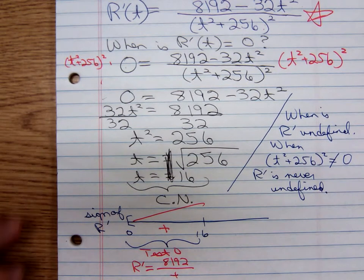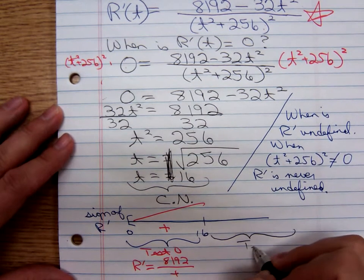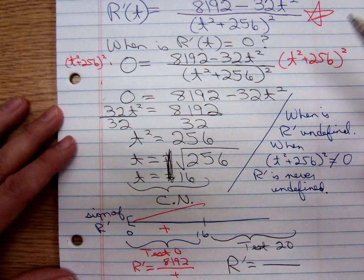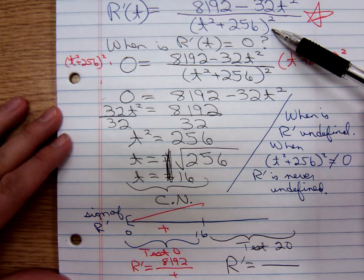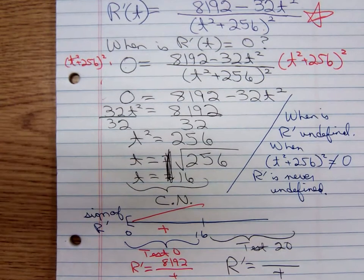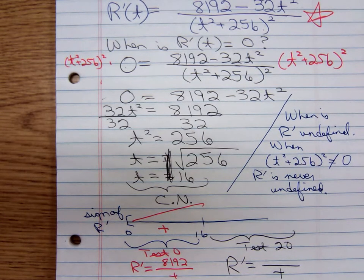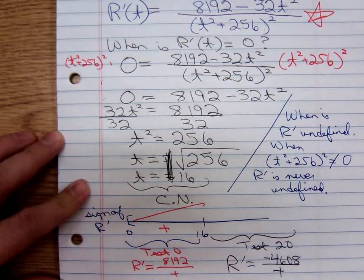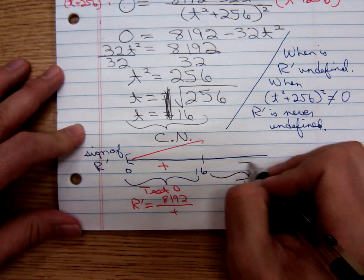And to the right of 16, what do y'all want to test? 20. Testing 20. First of all, do the denominator. We know the sign of the denominator—the denominator is always going to be positive. And when you plug in that 20, you're going to have an 8,192 minus 32 times 400, which is a negative 4,608. So what sign is the derivative to the right of 16? To the right of 16, it's negative. So decreasing.